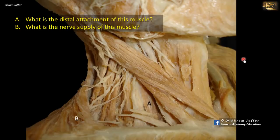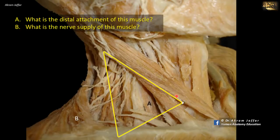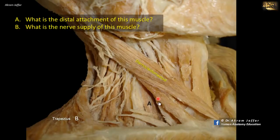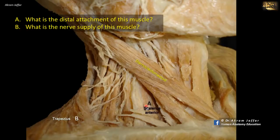What is the distal attachment of muscle A? The muscle is located in the posterior triangle of the neck, which is located posterior to the sternocleidomastoid muscle, between sternocleidomastoid and trapezius. In the floor of the posterior triangle, you can see whitish structures — these are parts of the brachial plexus, specifically the trunks. Anterior to the brachial plexus is the scalenus anterior muscle, and posterior to it is the scalenus medius muscle. So A is the scalenus anterior muscle.